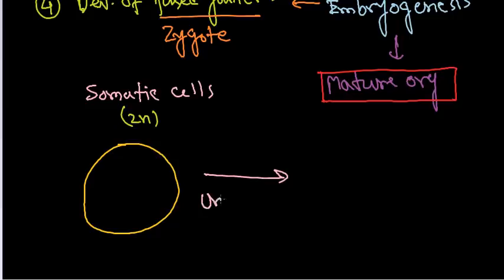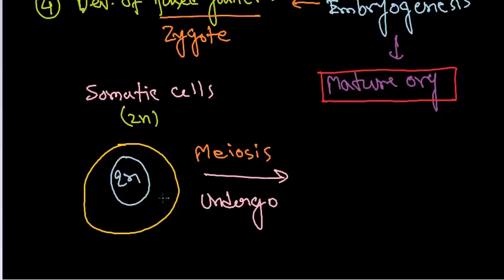The somatic cells undergo a process called meiosis. Meiosis is a special type of cell division which will make the number of chromosomes half. That is very important. Here we have 2n number of chromosomes inside the nucleus. After meiosis, it will produce cells with n number of chromosomes inside.